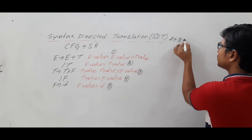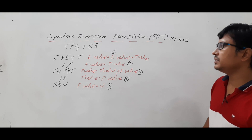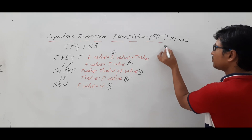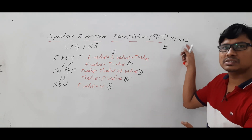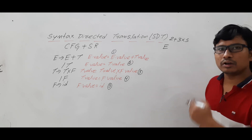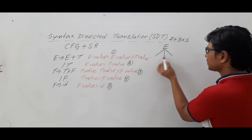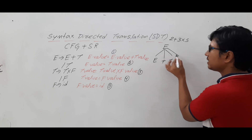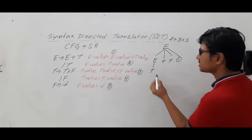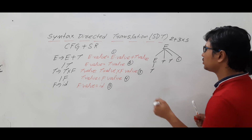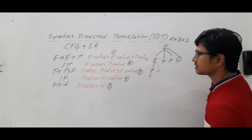Now let me take a string which can be parsed using this grammar: 2 plus 3 into 5 — giving the values — which is nothing but ID plus ID into ID. I will start from the start symbol because I am doing a top-down parse. E determines E plus T, and the corresponding rule I want to perform is rule number one. Similarly, E determines T and the corresponding rule is two.